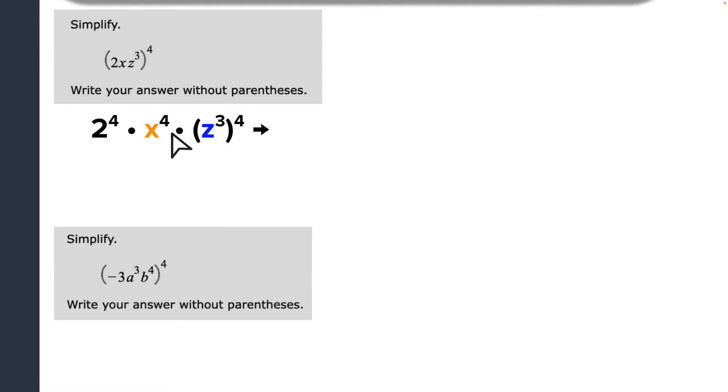So now I'm going to do 2 to the fourth. So that's 2 times 2 times 2 times 2. And that gets me 16. So that's my first piece here. And then I have x to the fourth, z cubed to the fourth power. So I haven't done anything with the x and the z yet.